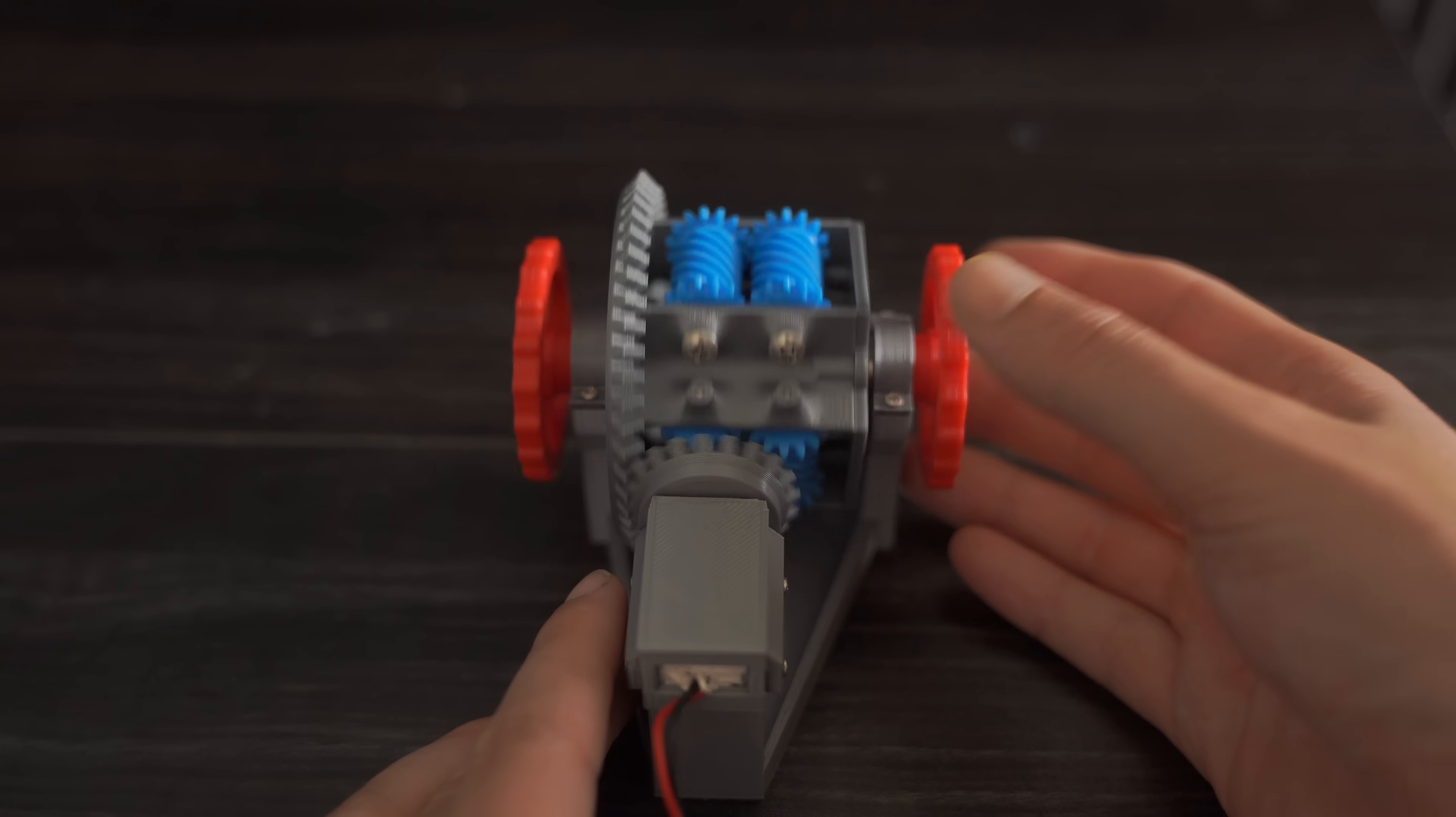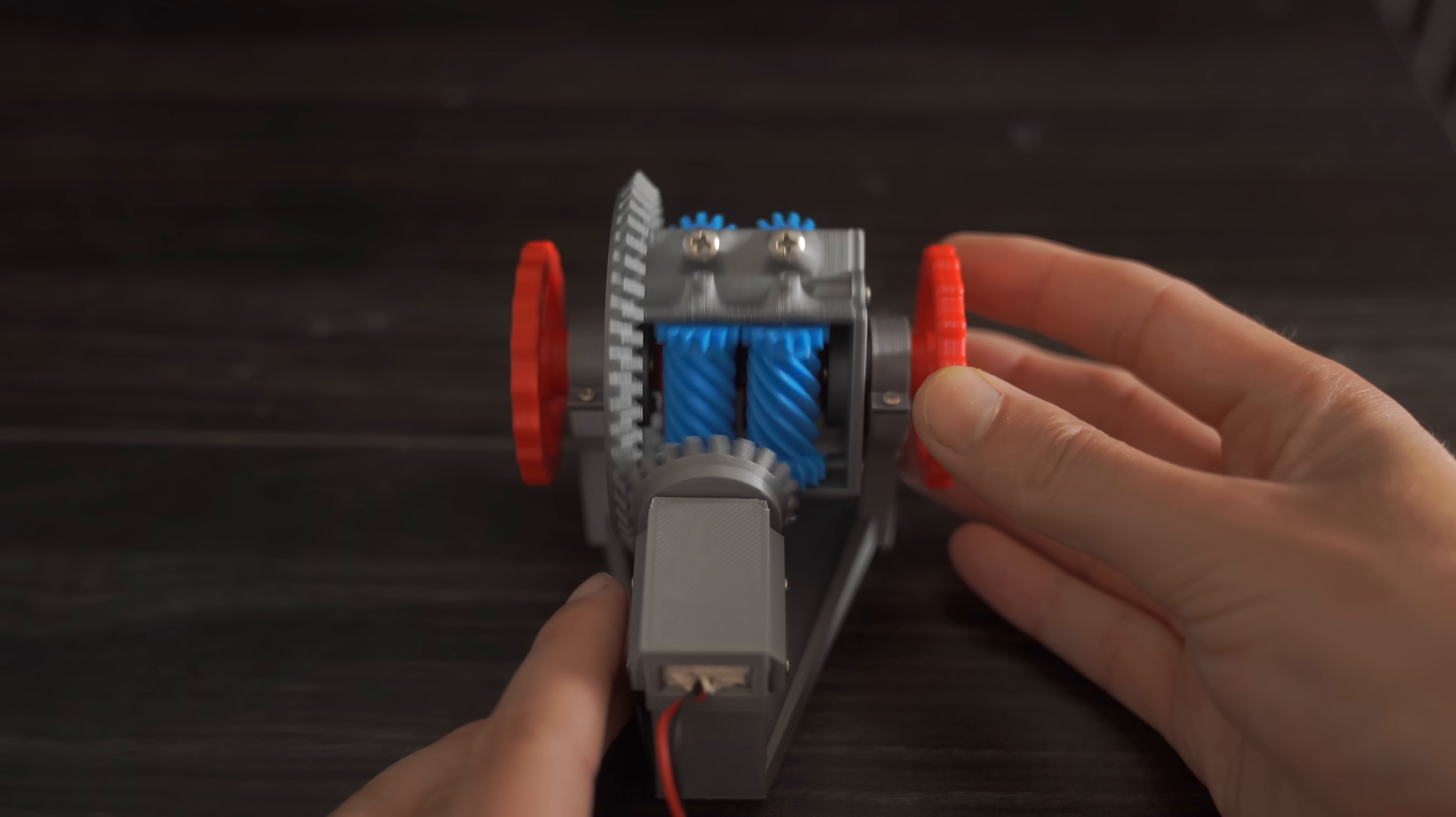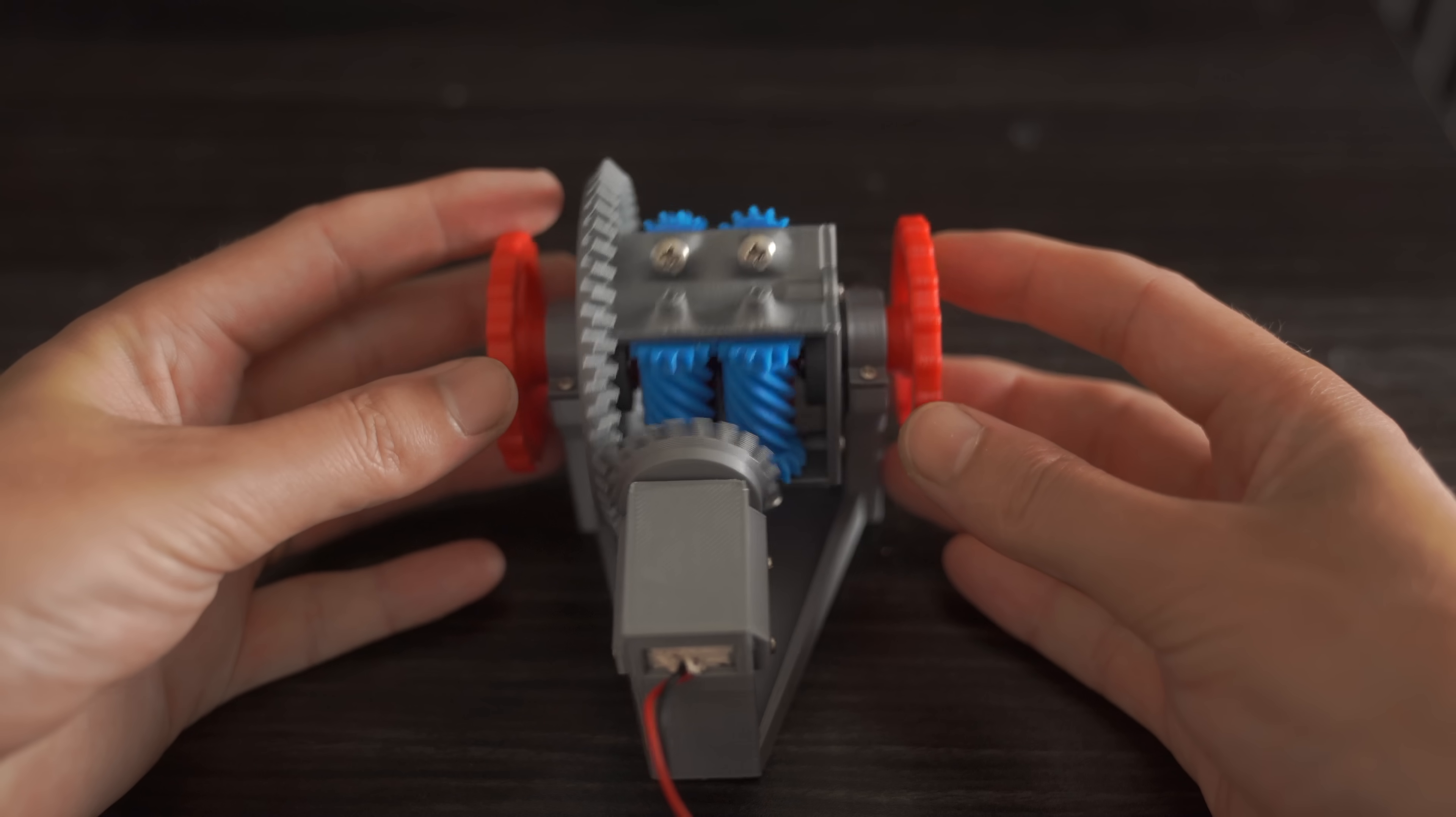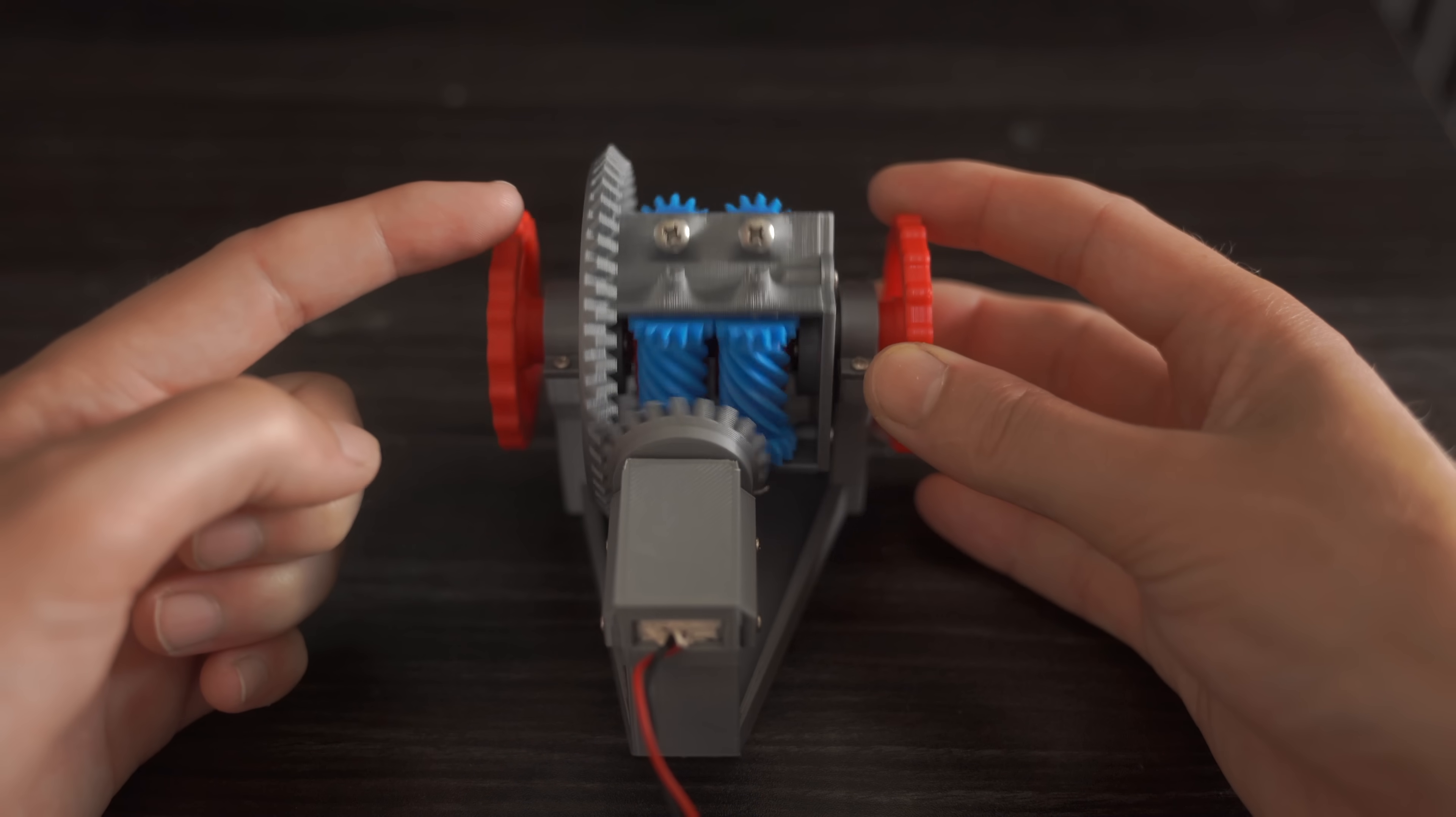Now, this is where it gets really cool. An open diff is susceptible to the one wheel peel. This limited slip diff acts kind of like an open diff. If the right wheel has a ton of traction and the left wheel has zero traction, it's still possible for the one wheel to spin.